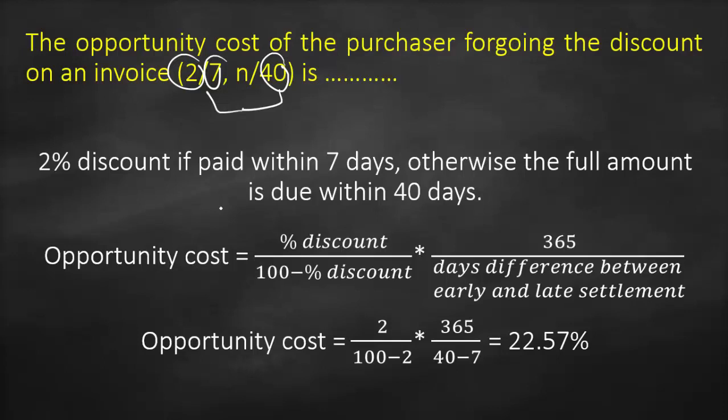This is how a company thinks about whether to offer a discount or not. They need to compare the opportunity cost percentage with the cost of debt — meaning the cost of the loan or bond issuance required to finance their operating cycle.